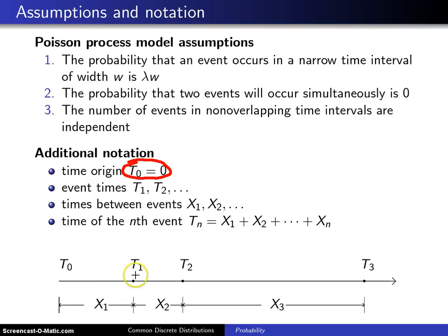And here is an axis where this dot represents the random time of the first event, T1. This T2 is the random time of the second event, and T3 is the random time of the third event in the Poisson process, and that's given by this dot on this time axis.